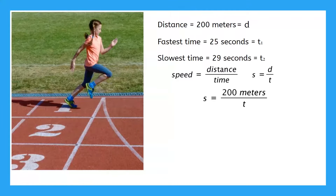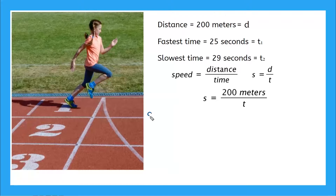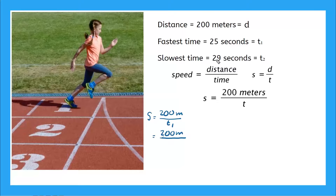Time t is a variable because it can vary. Let's evaluate when t equals t1, her fastest time. We have s equals 200 meters divided by t1. Substituting t1 with 25 seconds gives us 200 divided by 25. Evaluating using order of operations — just division here — gives us 8. So Chloe's speed was 8 meters per second when she ran her fastest race.